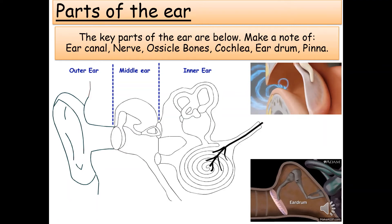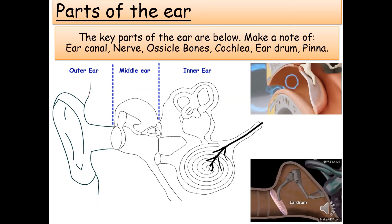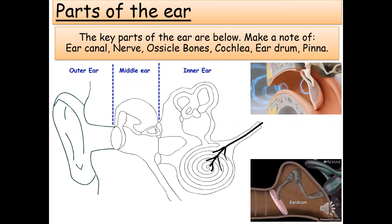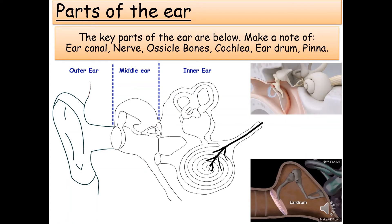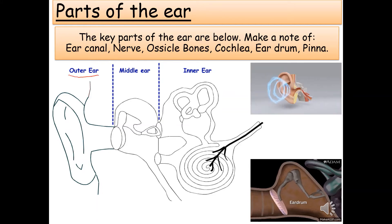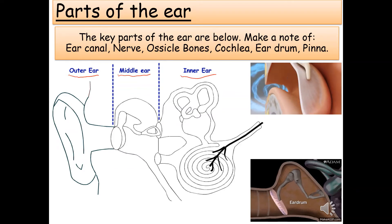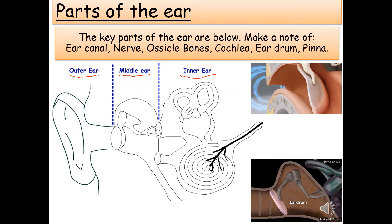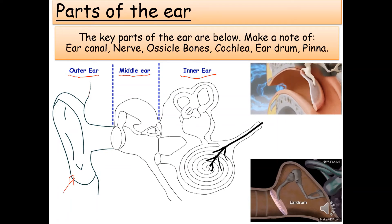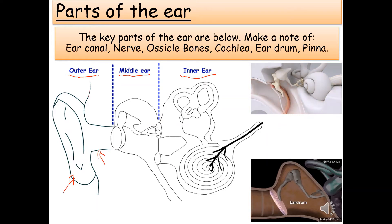Now we'll go through the parts of the ear and how they come together to let you hear sound. Ears collect sounds and turn them into messages for the brain to interpret; they also send information about balance. There are three main parts of the ear: the outer ear, the middle ear, and the inner ear. The outer ear includes the pinna and the ear canal, which act together to gather sounds and focus them towards the middle ear.